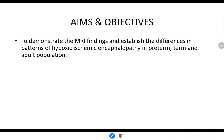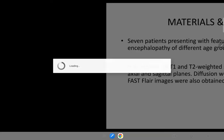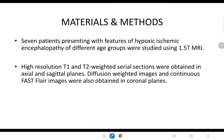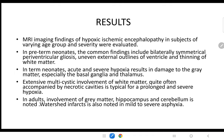The aims and objectives of this study are to demonstrate MRI findings and establish the difference in the patterns of HIE in term, preterm, and adult populations. Seven patients presenting with features of HIE of different age groups were studied using 1.5T MRI. High resolution T1 and T2 weighted serial sections were obtained in axial and sagittal planes. Diffusion weighted images and continuous fast FLAIR images were also obtained in coronal planes.